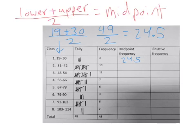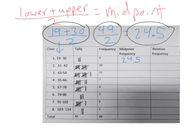And Ms. Caldwell is going to want you to show your work, so I would put the 19 plus 30 divided by 2 and all of this. I would write that on your paper somewhere. So you're going to continue doing that all the way down for midpoint frequency.